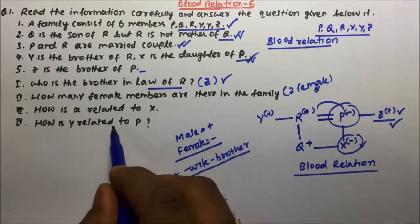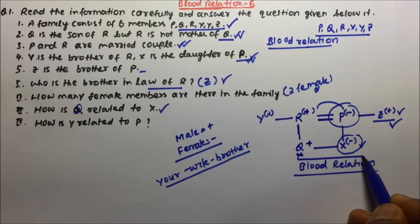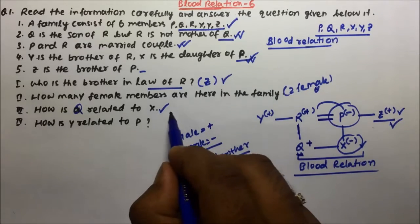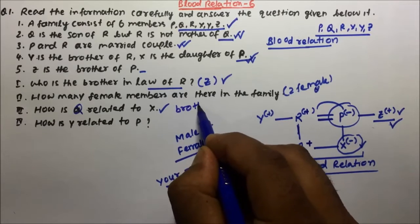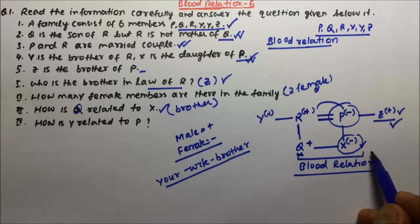Next question is how is Q related to X? So now you see where is Q? Q is here and how is Q related to X? So Q and X is brother-sister relation. So Q is brother of X. You see here Q and X are brother-sister, so Q will be brother of X.